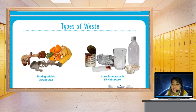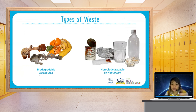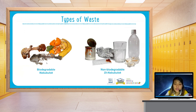What are the different types of waste? We have two: the biodegradable — in Tagalog, 'nabubulok' — and the non-biodegradable. As you can see in the picture, examples of biodegradable waste include food waste like fish, chicken bones, banana peelings, and tomatoes.